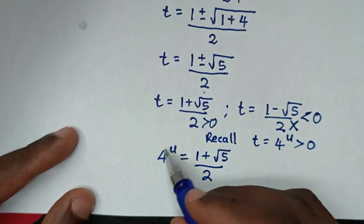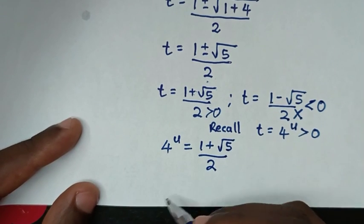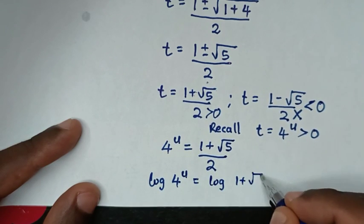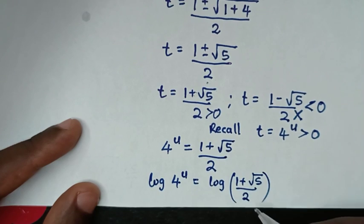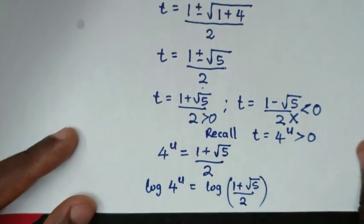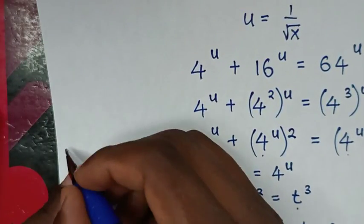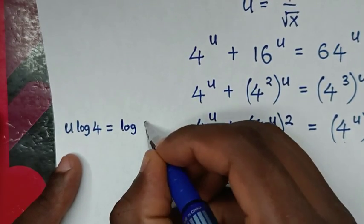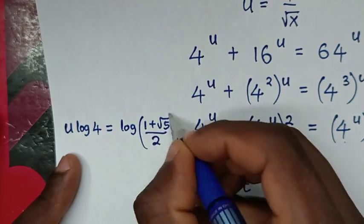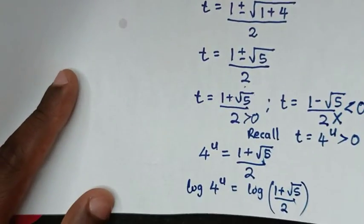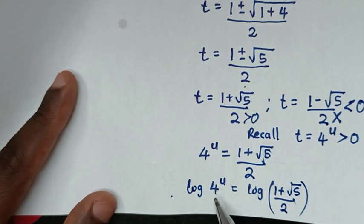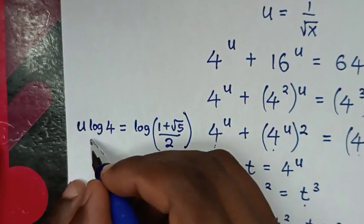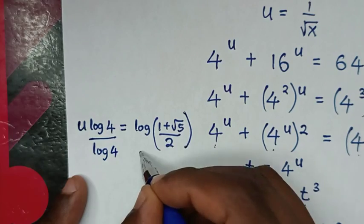In the next step, to find the value of u, we apply log to both sides. So it becomes log of 4 to the power of u equals log of 1 plus square root of 5 over 2. The power of u moves to the front, giving u times log 4 equals log of 1 plus square root of 5 over 2. We then divide both sides by log 4.